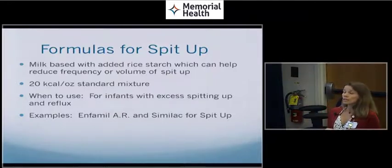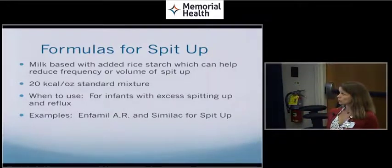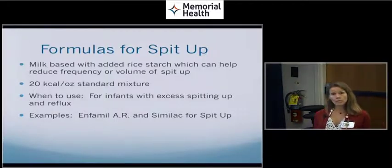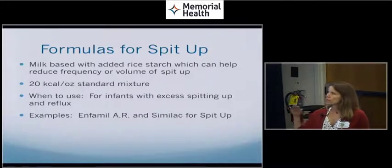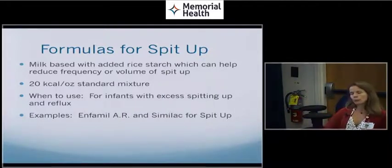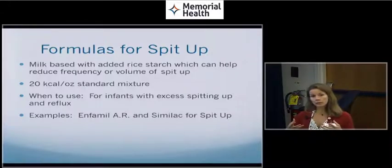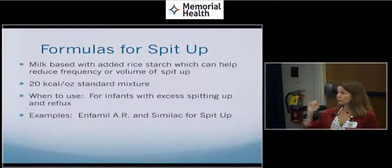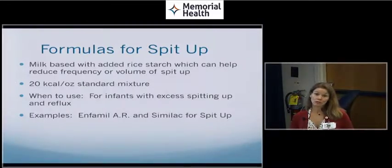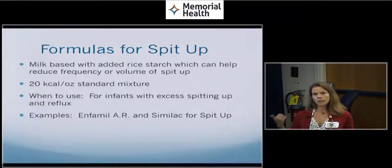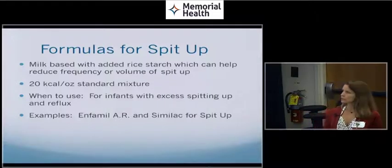These formulas are again 20 calories per ounce for standard mixture. We use these for excess spitting up and for babies with reflux. Enfamil AR and Similac for spit up are two of the common examples. Now I will tell you, these formulas, while we talk about concentrating feeds and making them have more calories to help babies that struggle to grow, these formulas can only be concentrated to 24 calories per ounce. So if babies require higher concentration levels for improved growth, we can't concentrate these beyond 24 calories per ounce.